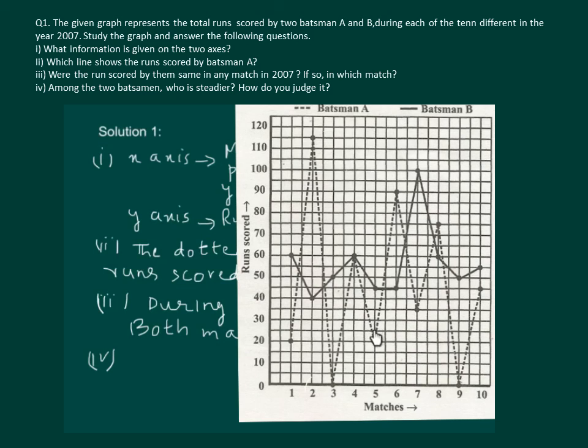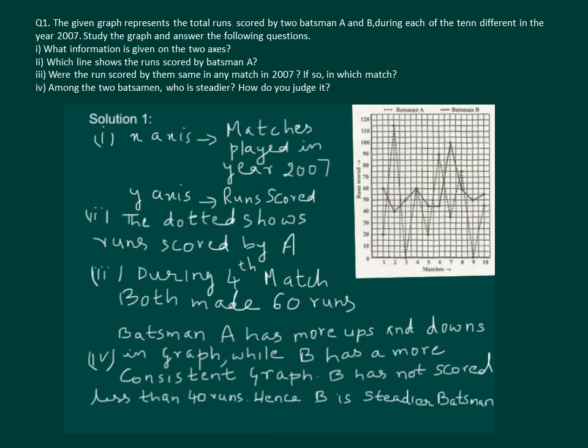So we can say that B's graph is more consistent and he is more reliable batsman. Hence, we will answer that batsman A has more ups and downs in his graph, while B has a more consistent graph. Also, B has not scored less than 40 runs. Hence, B is a steadier batsman.